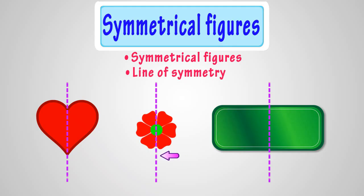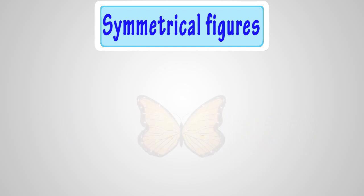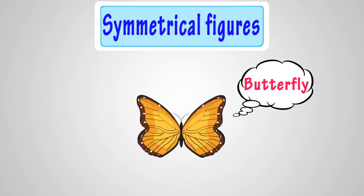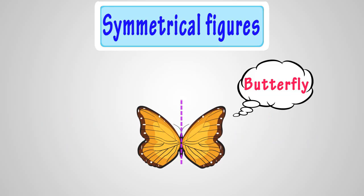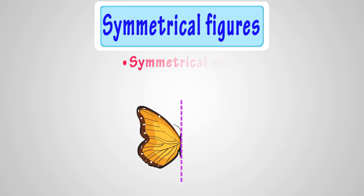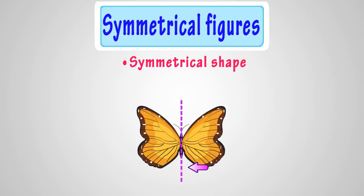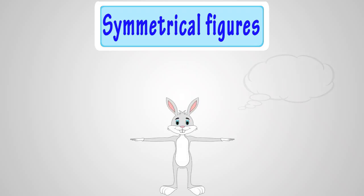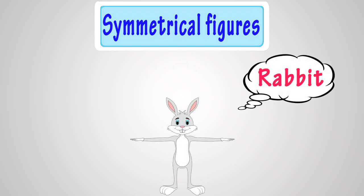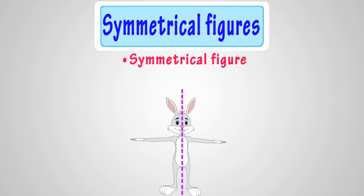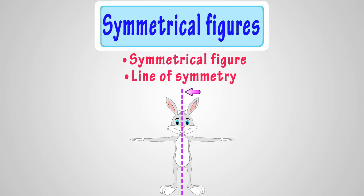Now, let's see a few examples of some symmetrical figures and their line of symmetry. Here we have a butterfly and we can fold it exactly halfway, so it's a symmetrical figure and the line of fold is the line of symmetry. Here we have another symmetrical figure — a rabbit. We can fold it exactly halfway, so it's a symmetrical figure and the line of fold is the line of symmetry.